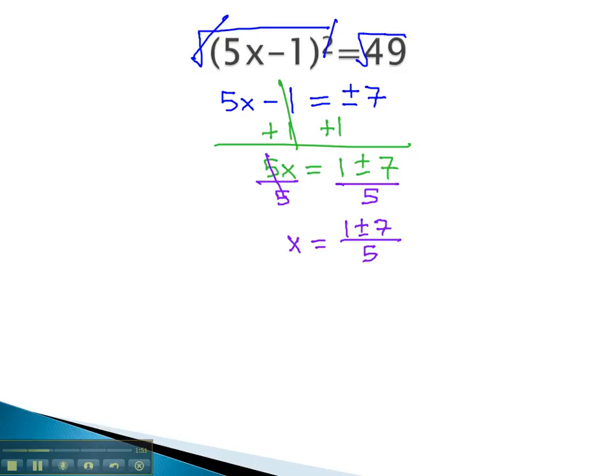Once we have isolated the x completely, then we will actually separate this plus or minus symbol into two different results, one where we add and one where we subtract the numbers in the numerator, to get our two final answers for x.